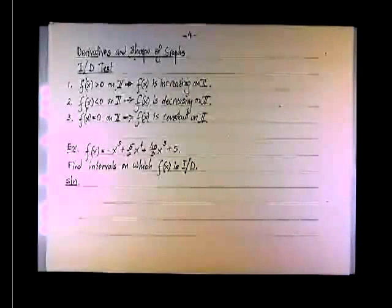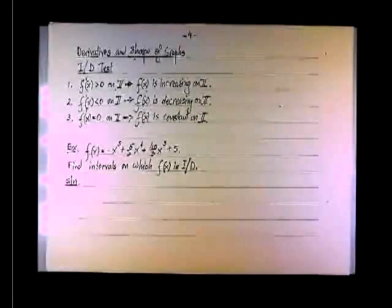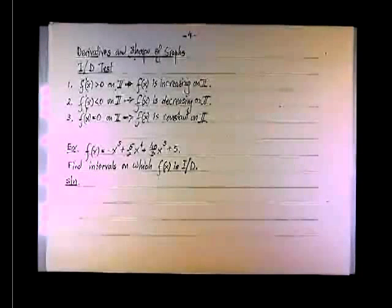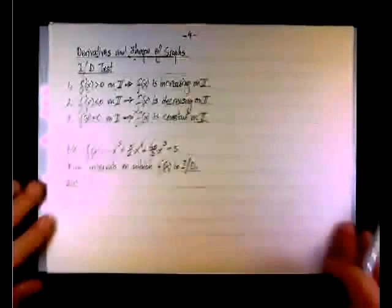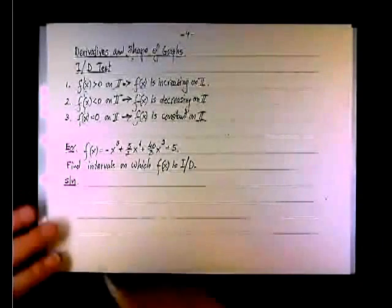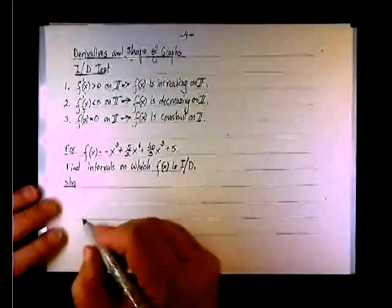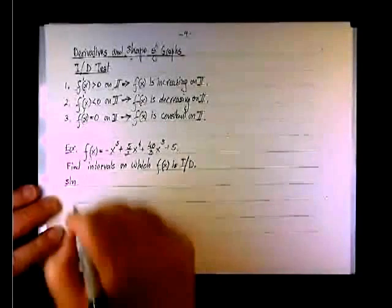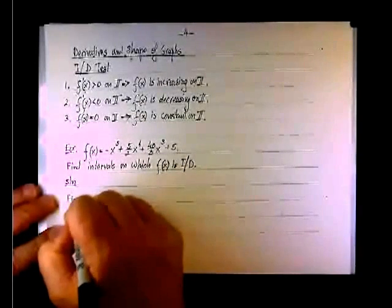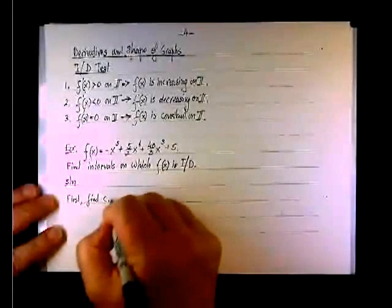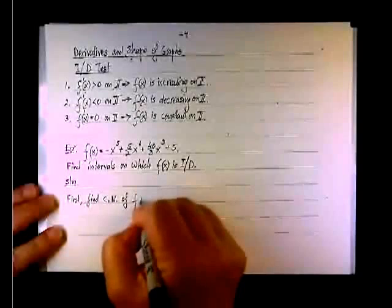A critical point may or may not be a relative extremum — relative max or min. It's not guaranteed that a critical point will be a place where the function changes from increasing to decreasing. Recall x cubed: the derivative equals zero at x equals zero, but the function is continuously increasing with no relative extremum there. Nevertheless, the first thing to do is find the critical numbers of f of x.